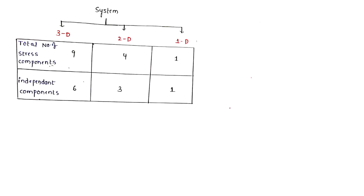In the 3D system: isotropic material has 4 overall and 2 independent elastic constants. Orthotropic has 12 overall and 9 independent. Non-isotropic or anisotropic has 21 independent constants.